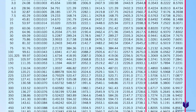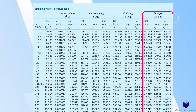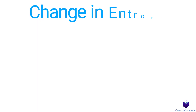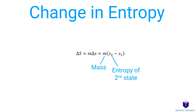Let's go through the new equations you'll need and then review some old ones. To figure out the change in entropy with a specified mass, we can use this equation. This is the mass, this is the entropy of the second state, and this is the entropy of the first state.